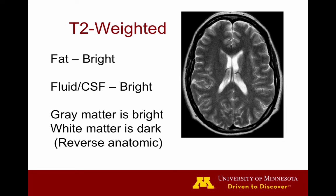On this T2-weighted image, the CSF signal is quite bright, and we have the reversal of the anatomical gray-white differentiation that we had with T1-weighted images. Looking at the cortex and the deep gray nuclei, you'll see that they're a little bit brighter than the white matter. You may also have heard that fat is dark on a T2-weighted image.